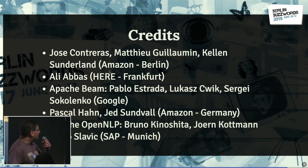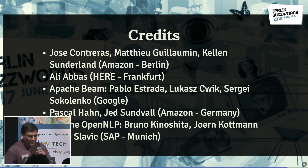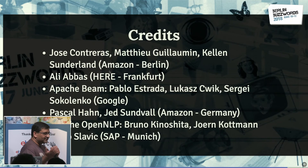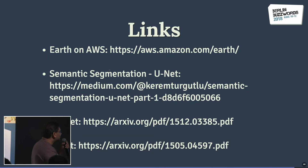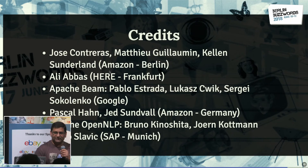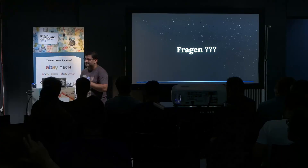That concludes the talk. Credits go to Jose, Kellen, and Matthew from Amazon Berlin; Ali Abbas from Frankfurt, an expert on computer vision and land use classification who contributed key ideas; the Apache Beam folks from Google who helped get the Python SDK Flink runner working; and Jed Sunderwal from Amazon who maintains the Earth on AWS dataset, plus Pascal and others from Amazon and OpenNLP who reviewed the slide deck.